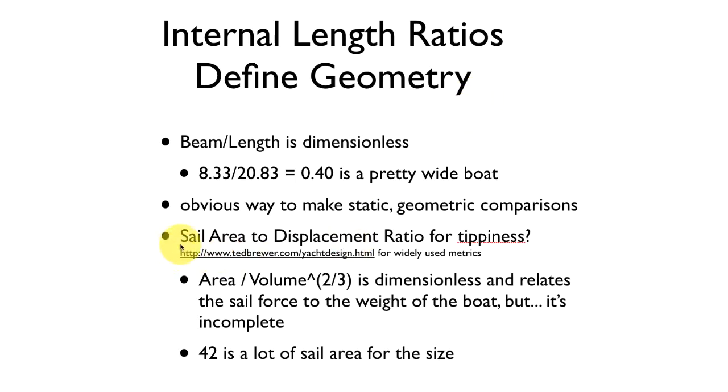We can also look at other measurements. One common one is sail area to displacement ratio. That tells us something about how tippy the boat is, how readily it heels over. The idea is that the more sail area and the lighter the boat, the more easily it will tip over or heel over in the wind.